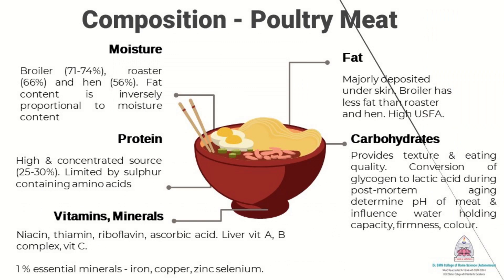Let us now try to understand the composition of poultry meat. Poultry meat is made up of moisture, proteins, vitamins, minerals, fats and carbohydrates. Broilers have a moisture percentage of 71–74%, roasters have a moisture percentage of 66%, and hen contains moisture around 56%.